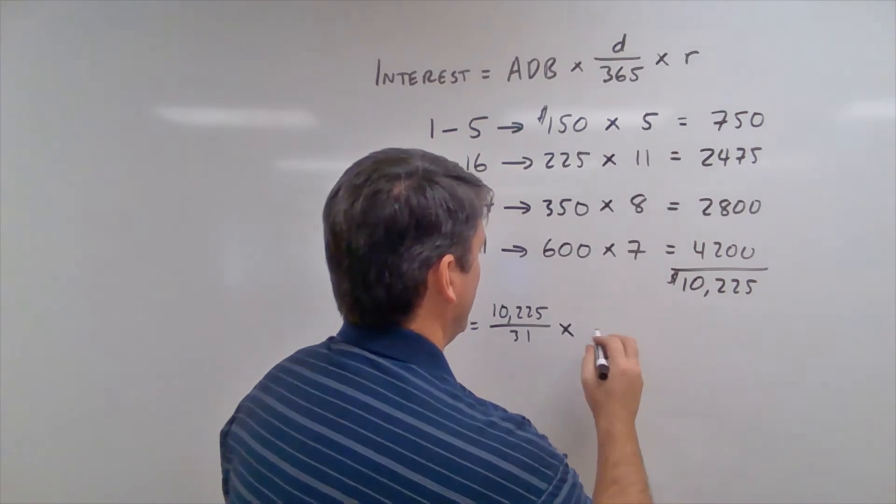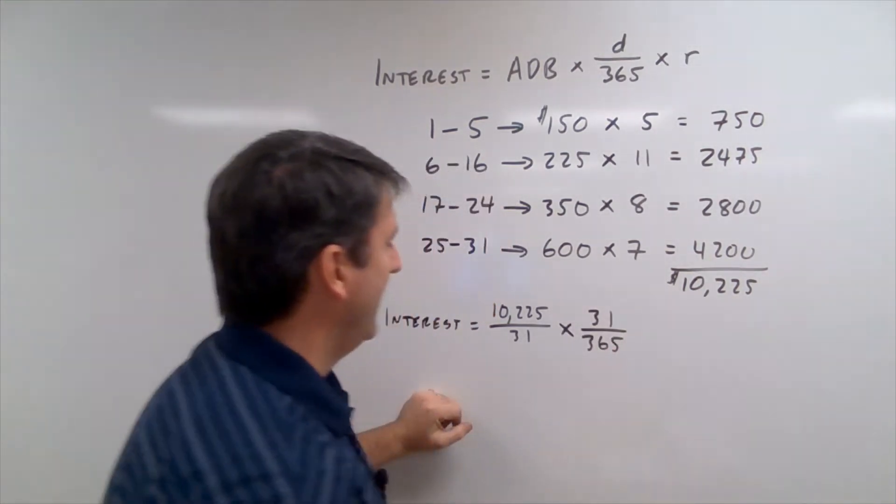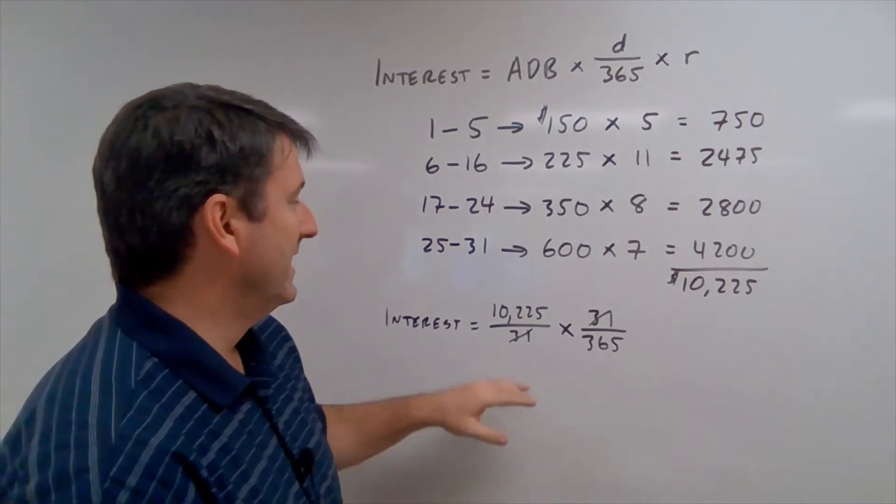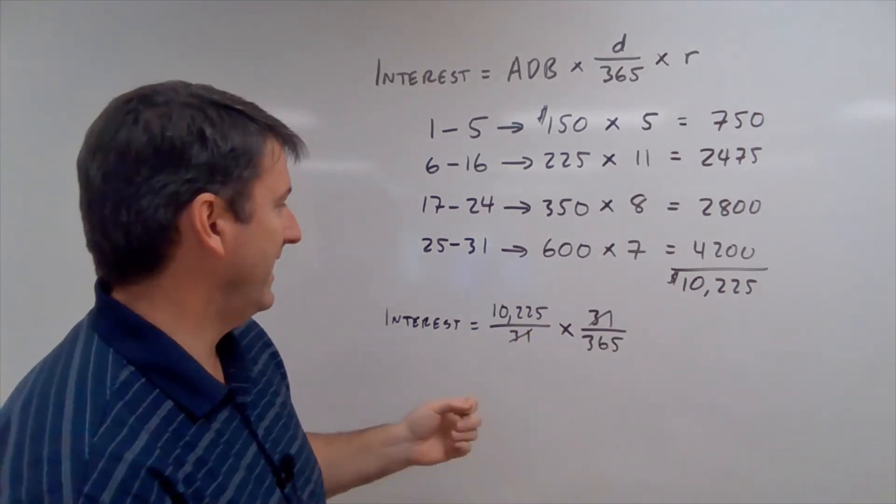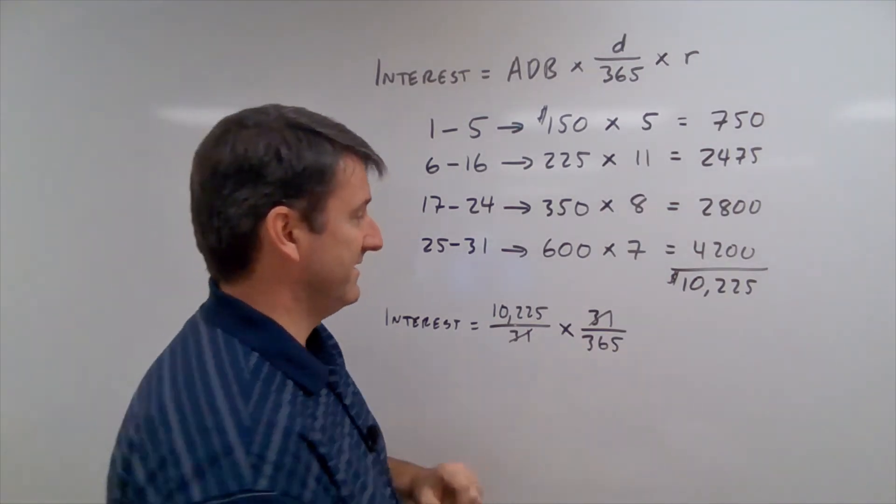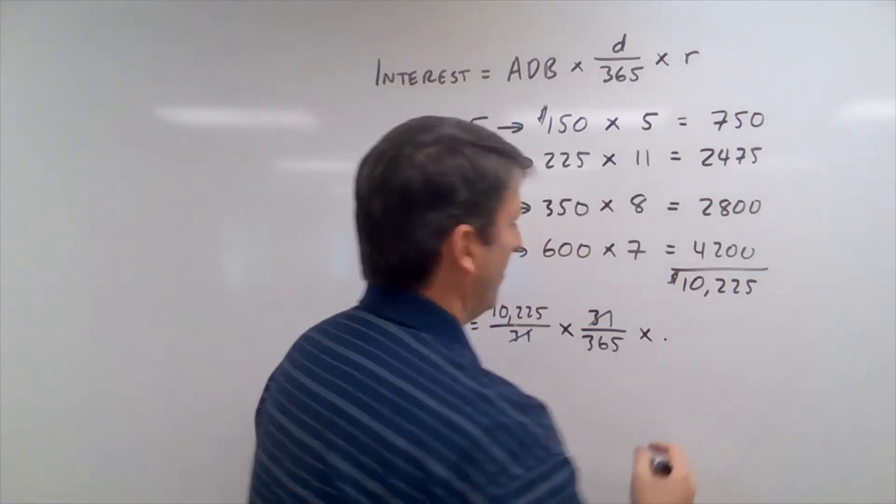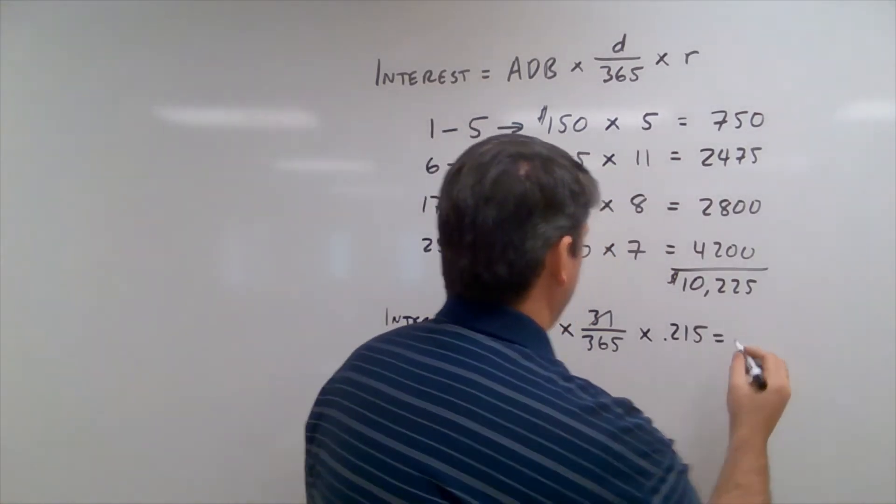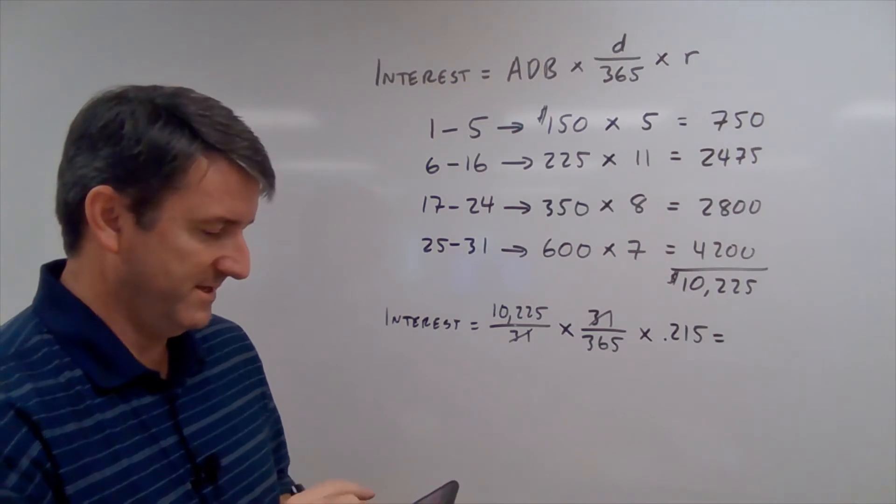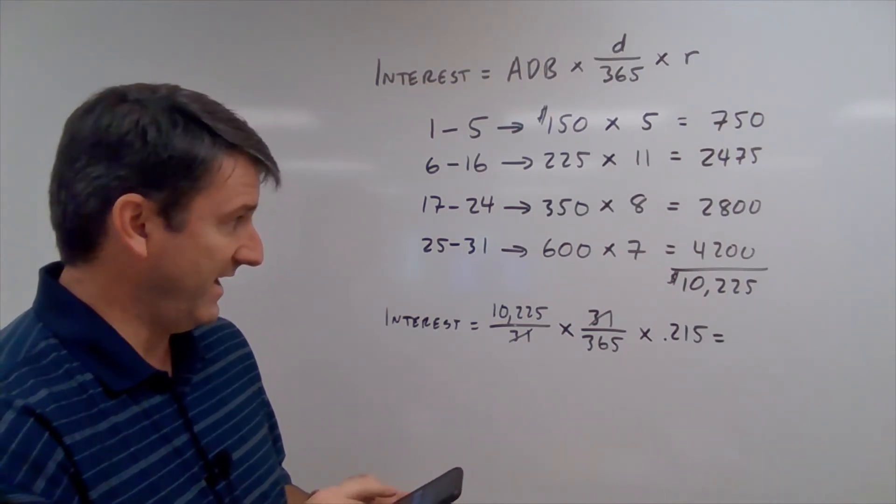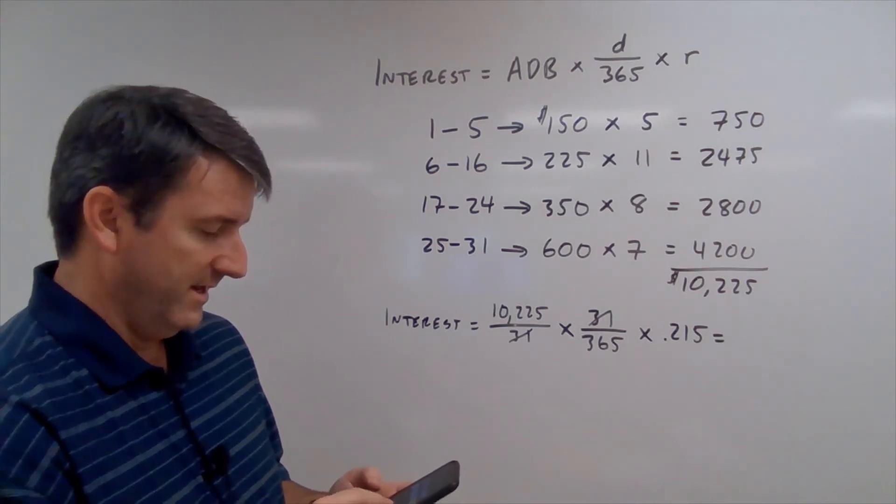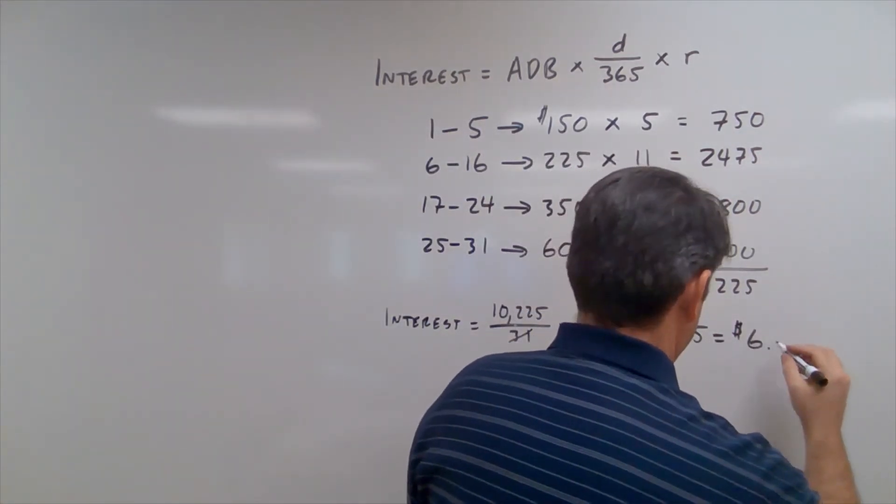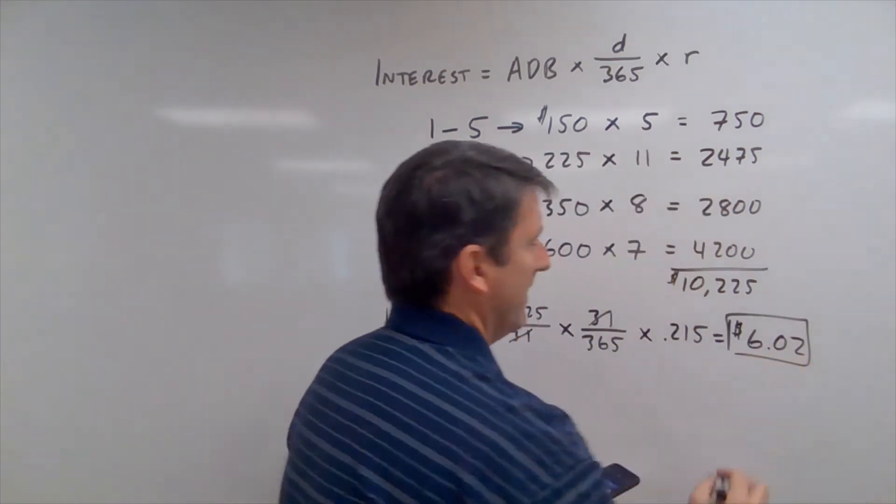So what we're doing here is we're going to multiply by 31 divided by 365. And notice what happens here. The 31s, we just divided by 31, now we're multiplying by 31. So these are going to divide to 1. And we're left with just $10,225 divided by 365, and then multiplied by our interest rate, which is 21.5%, or as a decimal, 0.215. And if we multiply these out, 10,225 divided by 365 times 0.215 gives us an interest payment of $6.02 for the month of January.